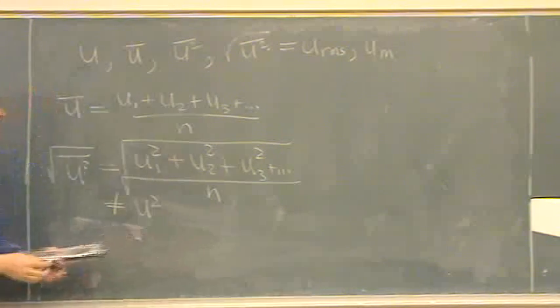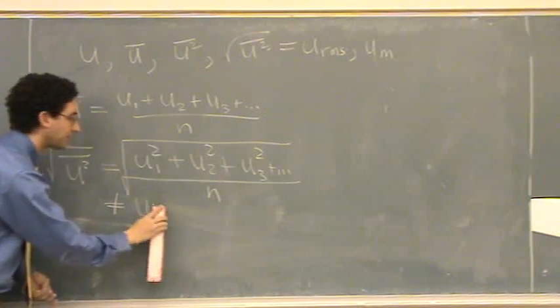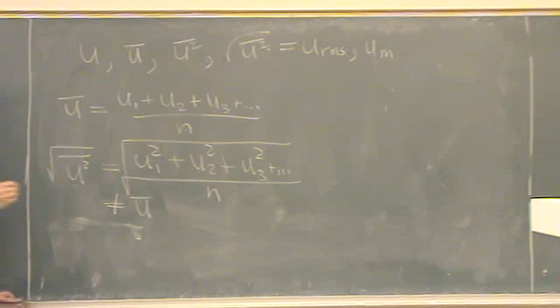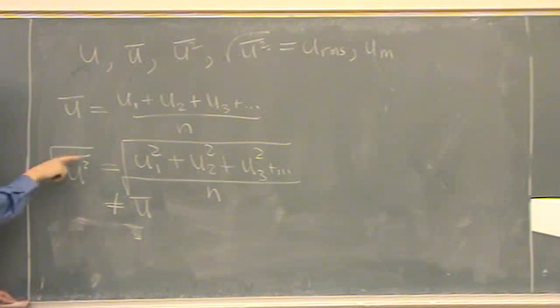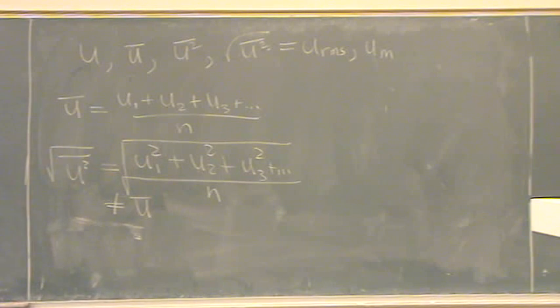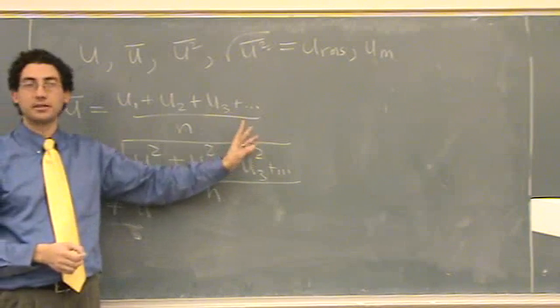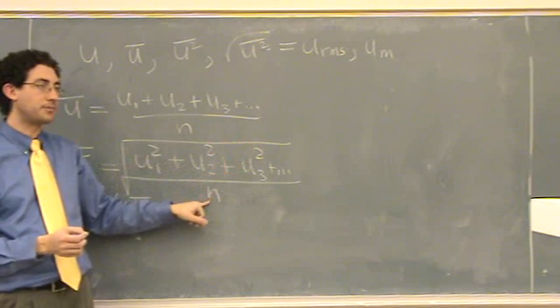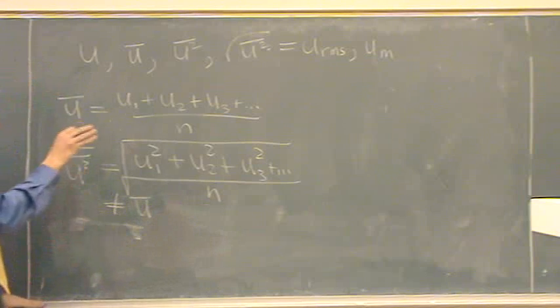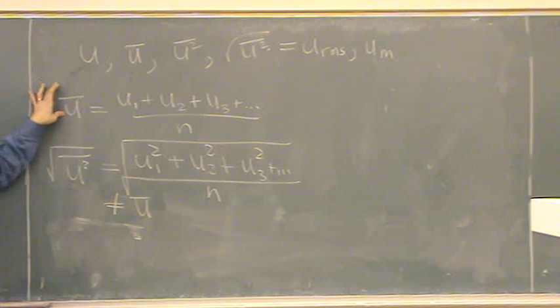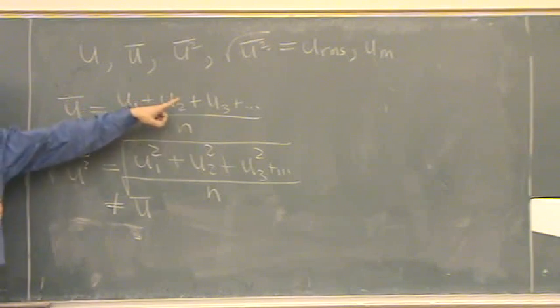And this does not equal U bar. You cannot take the square root of this and get U bar. Just mathematically, it doesn't work. So if you're given velocities, you just square the first one, the second one, the third one, however many you have, and divide by the total number. So that's how that's different. And this is different than the average velocity, because the average doesn't have squares in here.